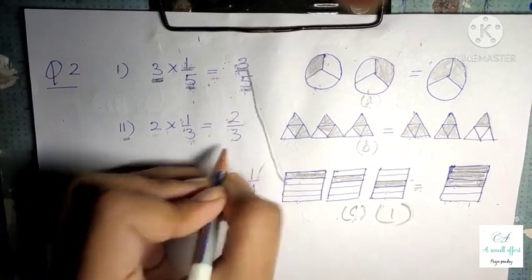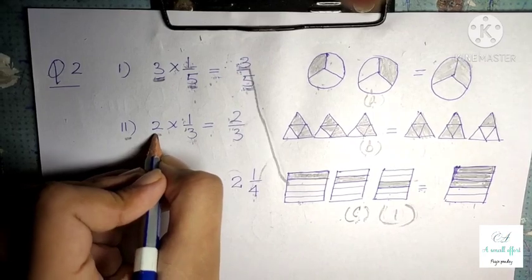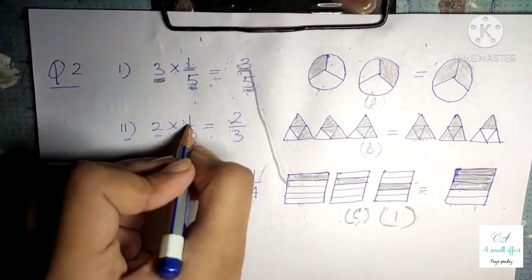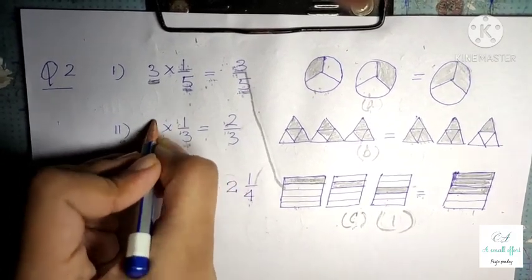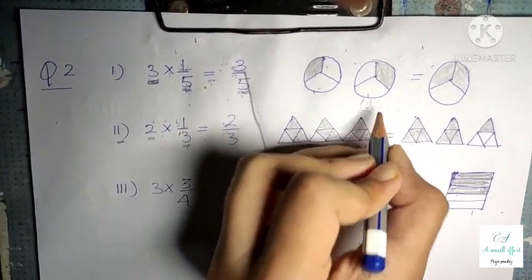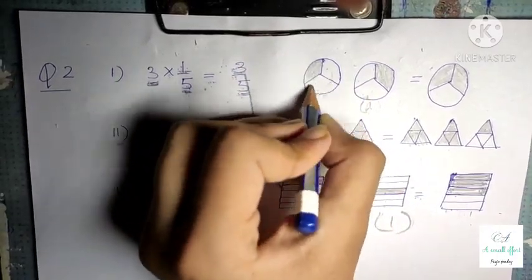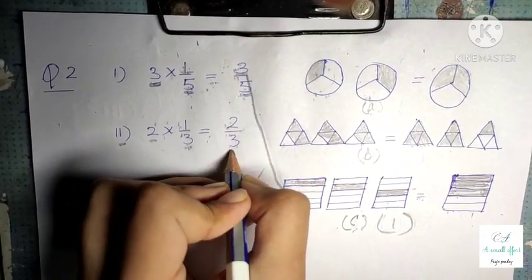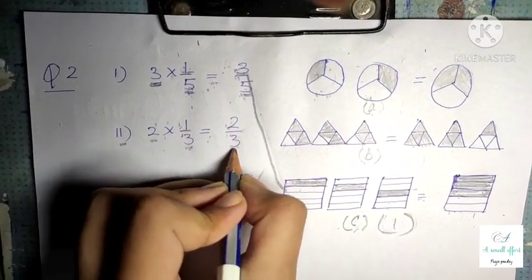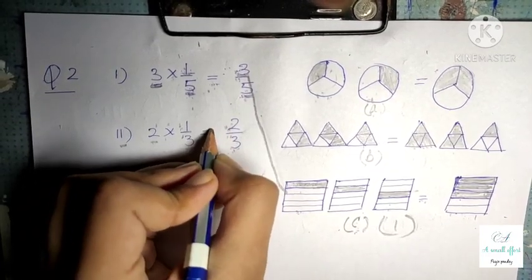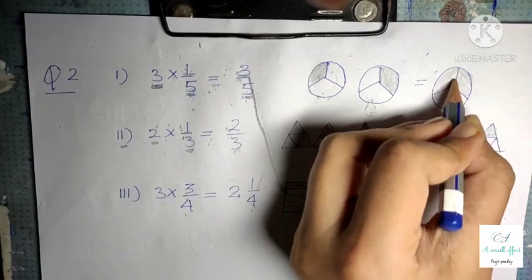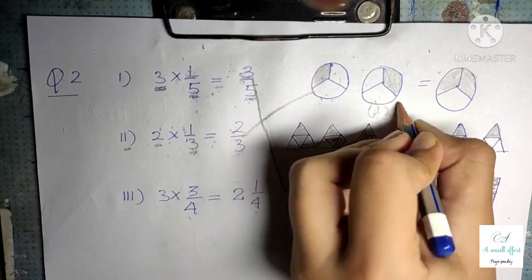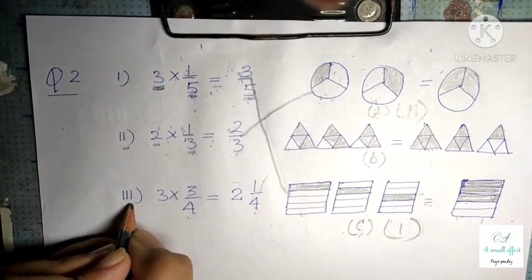The second part is 2 × 1/3 = 2/3. The option should have 2 figures, 3 is the denominator so 3 parts should be there, and 1 is the numerator so 1 part should be shaded. Here we can see 3 parts are there and 2 parts are shaded. So option 2 is matched with option A.